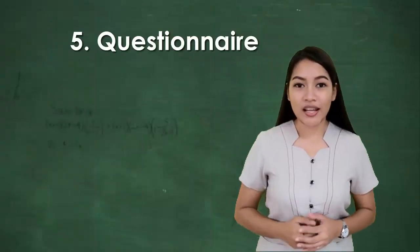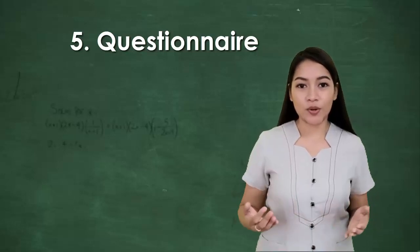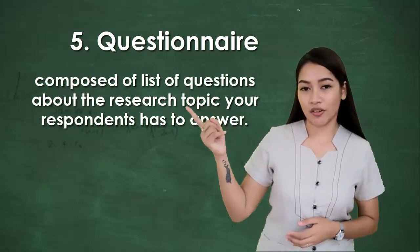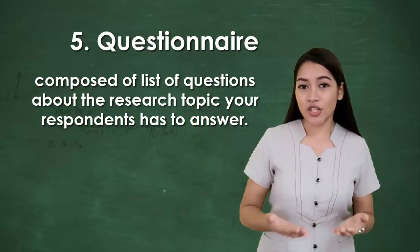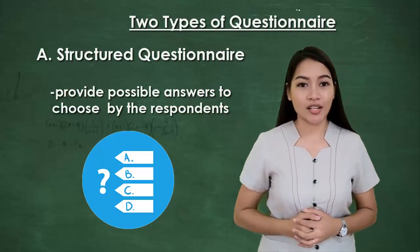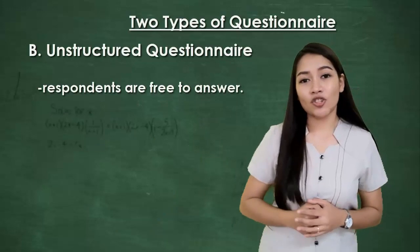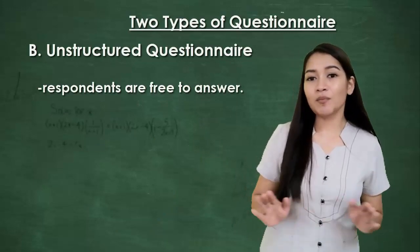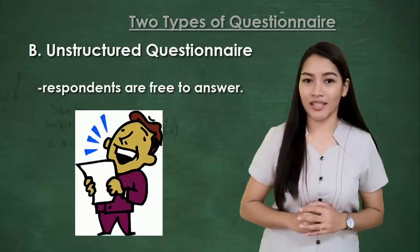Five: questionnaire. It is the most commonly used instrument in research. It is composed of a list of questions about the research topic your respondents have to answer. The questionnaire can be structured, which provides possible answers and the respondents have to select from them, while unstructured questionnaire does not provide options and the respondents are free to give whatever answer they want.